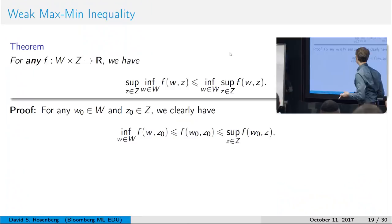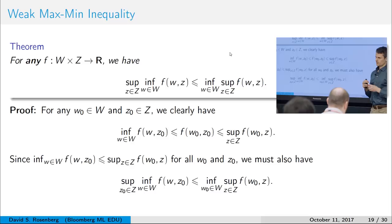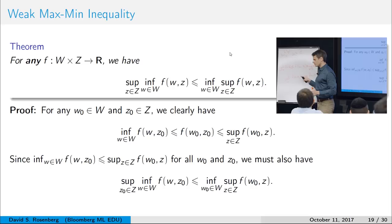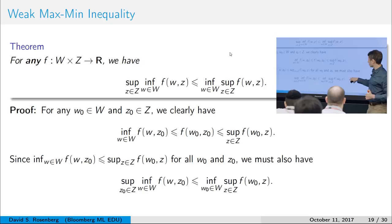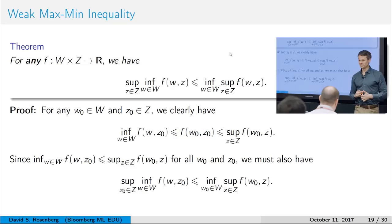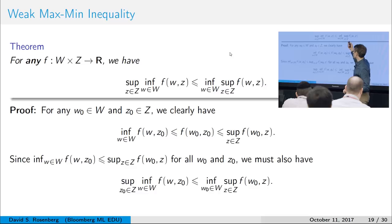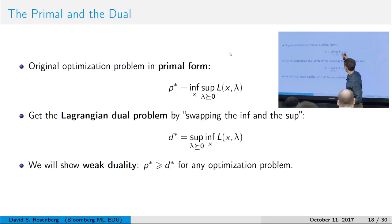This is called the weak max-min inequality: inf sup is greater than or equal to sup inf. That's it — that gives us weak duality, and it's always true. The gap between p-star and d-star is sometimes called the duality gap. We have strong duality by definition if p-star equals d-star.